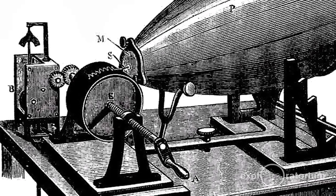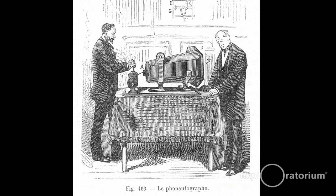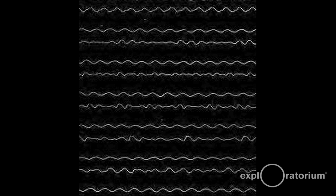And he had a horn and a diaphragm and a pig's bristle that was arranged so that when someone spoke and the diaphragm moved it would draw a corresponding line into the soot.